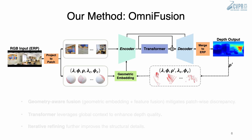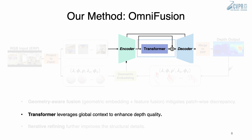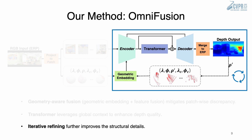To solve the discrepancy issue, we introduce a 360 monocular depth estimation pipeline, OmniFusion. First, we propose a geometry-aware fusion module to mitigate patchwise discrepancy. Second, we incorporate the self-attention-based transformer to leverage global context in order to enhance depth quality. Lastly, we introduce the integrity refining mechanism to further improve the structural details.